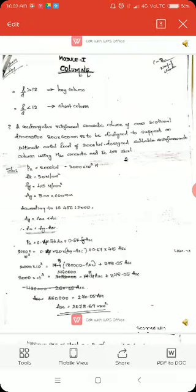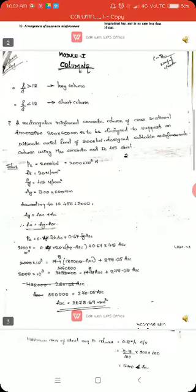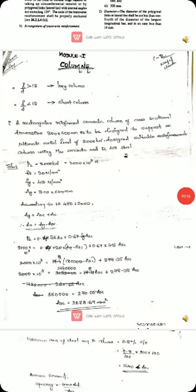A rectangular reinforced concrete column of cross sectional dimension 300 by 600 mm is to be designed to support an axial load of 2000 kN. Design suitable reinforcement for the column using M20 concrete and SP16. First, we have to write all the given data.